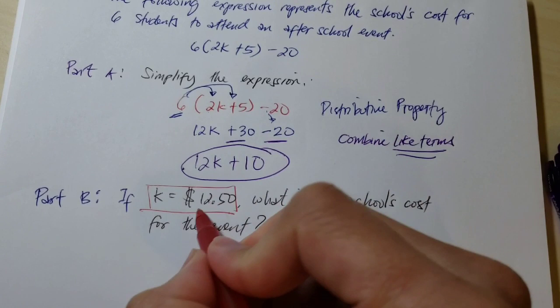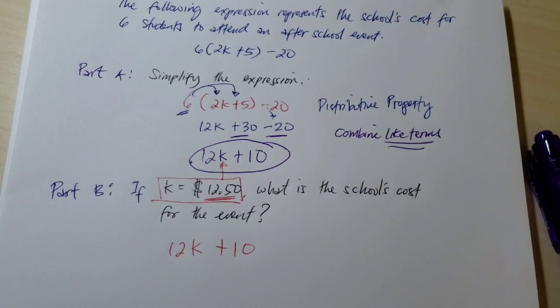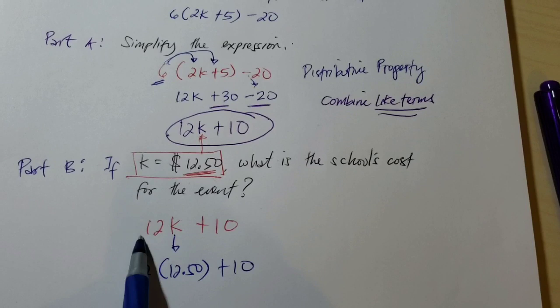The simplified expression was 12k plus 10, so what we need to do is change k to 12.50 and bring down the plus 10. Remember, these two are being multiplied. 12 times k is 12k, so it's a product.